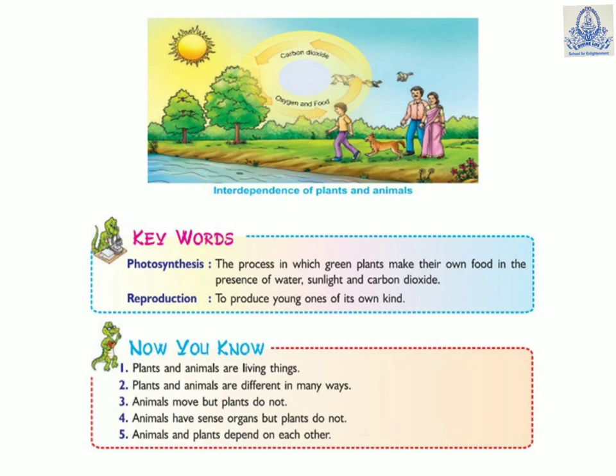Now, let's remember what we learned in this chapter. First: plants and animals are living things. Plants and animals are different in many ways. Animals move but plants do not. Animals have sense organs but plants do not. Animals and plants depend on each other.